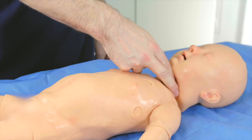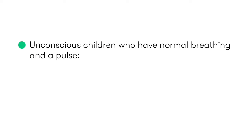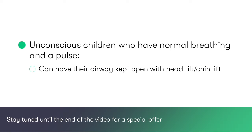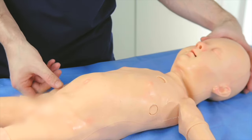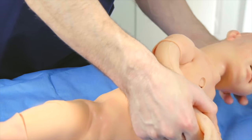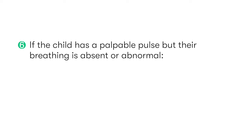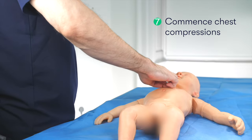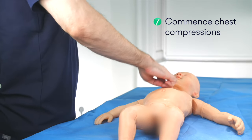Is the patient breathing, and do they have a palpable pulse? Unconscious children who have normal breathing and a pulse can have their airway kept open in the head tilt chin lift position, or if there is a risk of vomiting aspiration, then they can be placed in the recovery position. If the child has a palpable pulse but their breathing is absent or abnormal, then we can continue with rescue breaths. If there are no signs of life, then we should move on to providing chest compressions.